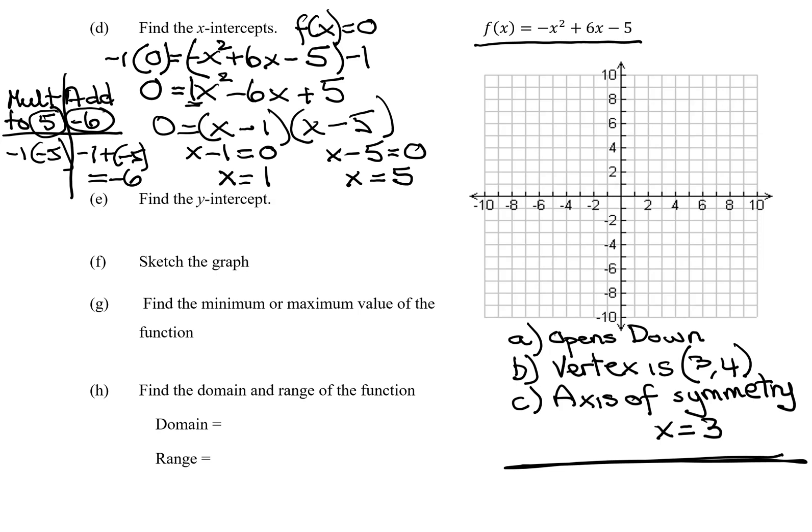So I'm kind of running out of room here. But what are my x-intercepts? There's two separate points. The x-coordinate on the first one is 1. What's the y-coordinate? 0. So there's 1. And the other one is 5, 0. So there are my x-intercepts.